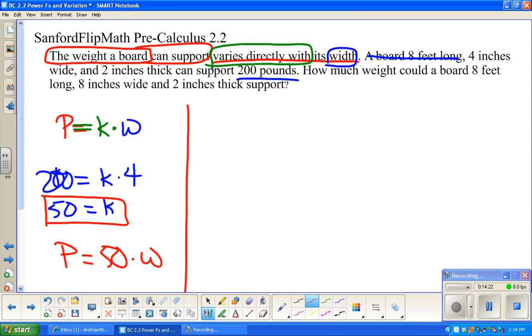So, now. I'm going to go back to the same information. And it says how much weight could a board eight feet long. Don't need that. Eight inches wide. Oh, I do need that. Don't cross out the thing I need. Eight inches wide. And two inches thick. So, notice what we're doing is we're keeping everything the same. The eight feet long and two inches thick. That stayed the same. The only thing that changed now is the width. So, the weight it can support equals 50 times, and now we're doing eight. So, that's 400 pounds.